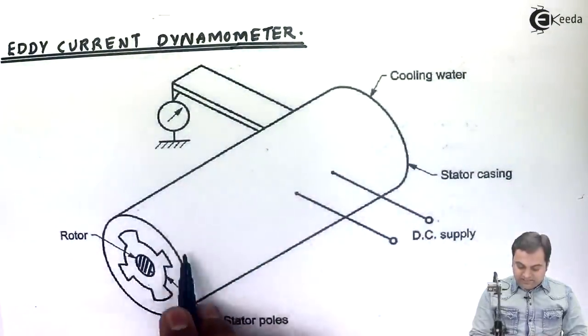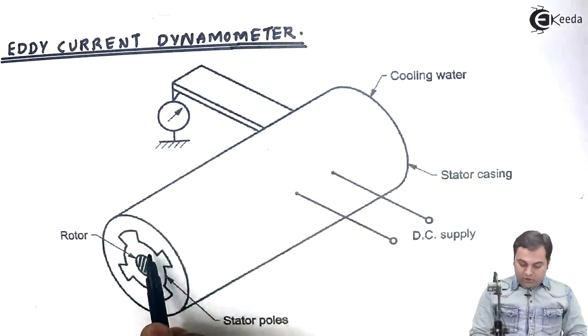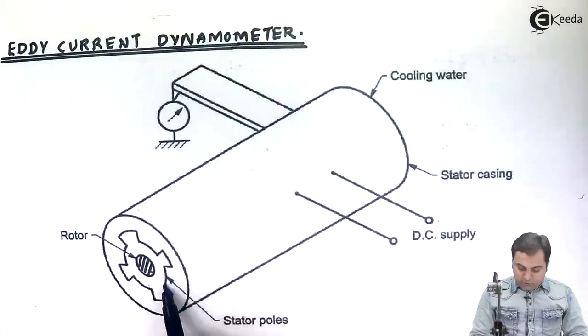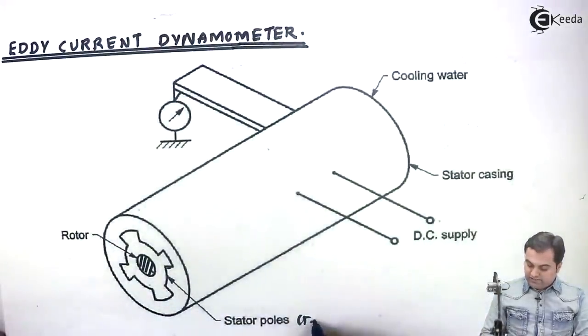Next, we have the stator. The stator is the stationary member. It has a number of poles, or we can say teeth. These stator poles are also called teeth.